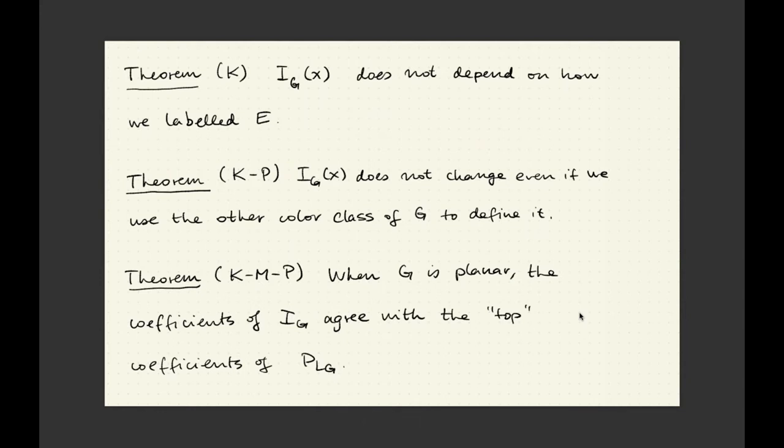First of all, my expression called the interior polynomial does not depend on how the set E was actually labeled — that's a very important technical point. But even more importantly, this interior polynomial doesn't change even if we change our minds and repeat our computation not with the green but the blue vertices. This is a rather interesting fact. And finally, there does exist the connection I promised to the HOMFLY polynomial: when G is a planar graph, so that I can construct the associated knot from it and talk about the HOMFLY polynomial of that knot, then the top of this HOMFLY polynomial has the exact same coefficients as the interior polynomial.